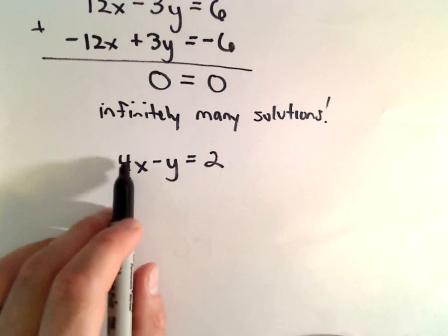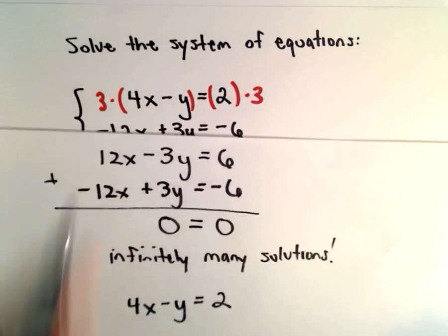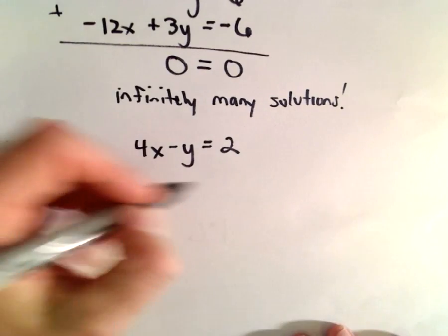I started with the 4x minus y equals 2, I started with my equation before we multiplied everything out. 4x minus y equals 2. I'm going to solve for y.